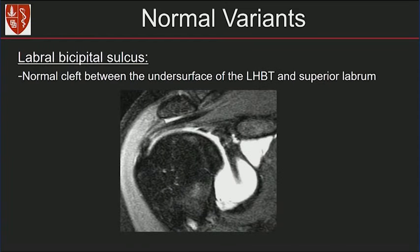There's another variant we should be aware of when looking for labral tears: the labral-bicipital sulcus. It's a normal cleft between the undersurface of the long head biceps tendon and the superior labrum. Here on a coronal T1 fat-suppressed MR arthrogram image, here's the long head biceps tendon coming into the superior labrum. Notice right underneath it you have the sulcus, which may fill with contrast — we should not misinterpret this as a labral tear.